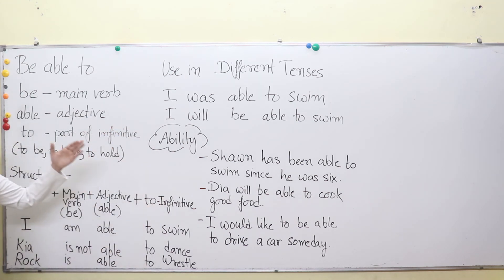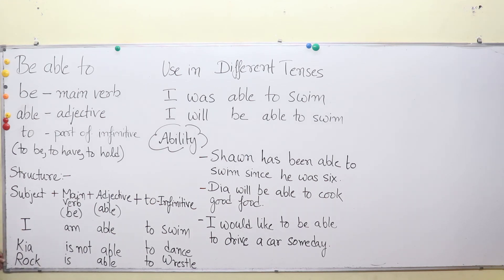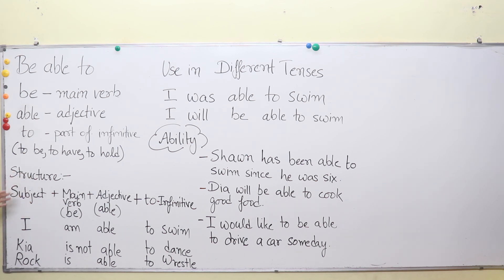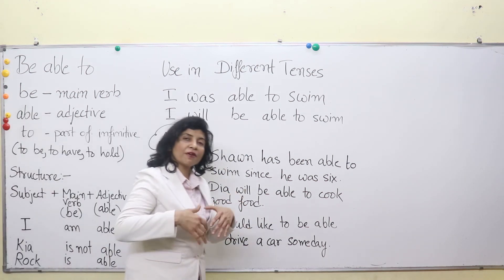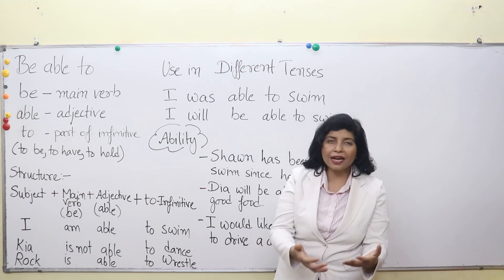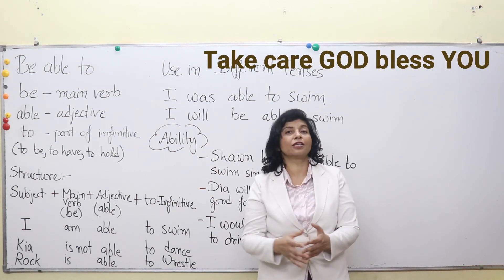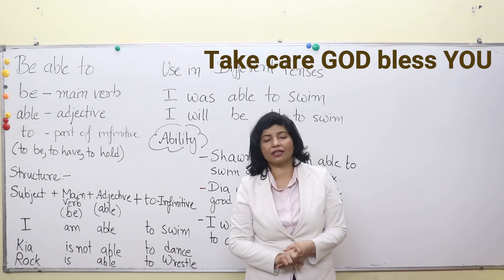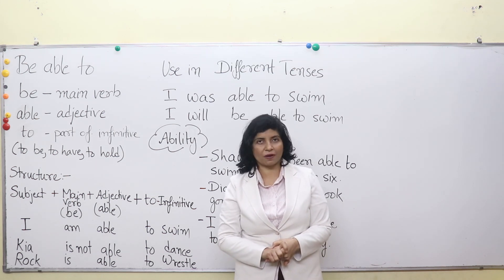In the same manner, you can frame sentences and use 'be able to' in your own communication, in your day-to-day life. There is one thing to practice grammar: just practice, practice, and practice — by writing it, by speaking it everywhere you can. Deliberately frame sentences whenever you can, and knowingly use these sentences in your day-to-day communication. That is how you will be able to speak fluent English. Thank you so much. Take care. God bless you.